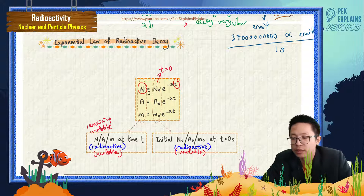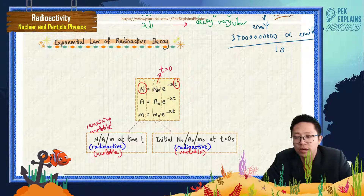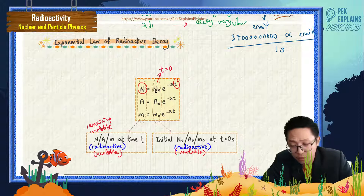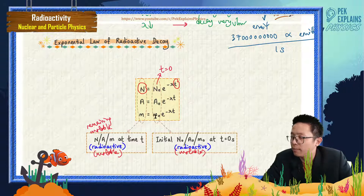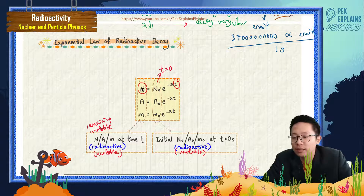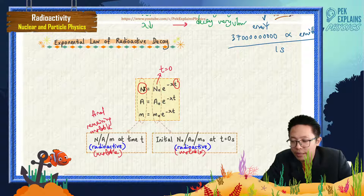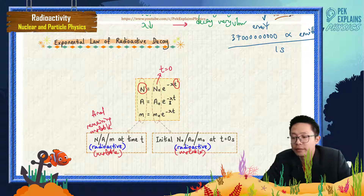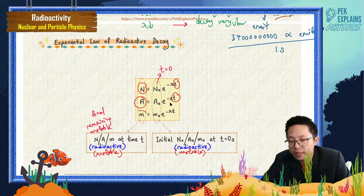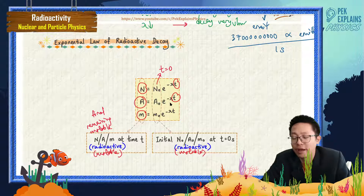And N is the final remaining unstable nuclei at this time t. A is the final activity at this time. M is the final remaining mass of unstable nuclei at this time.